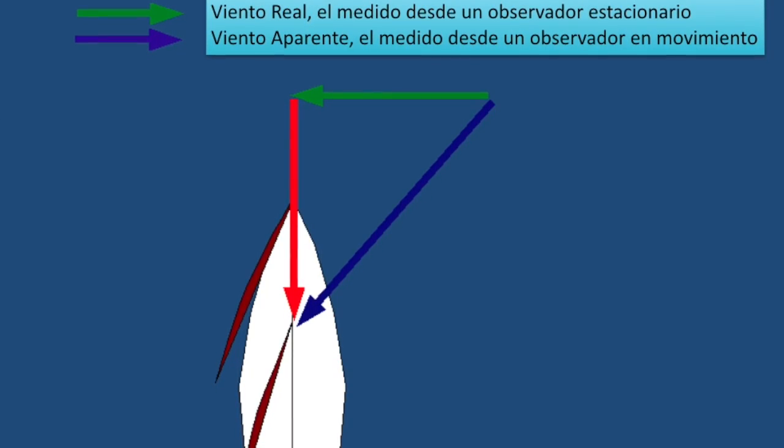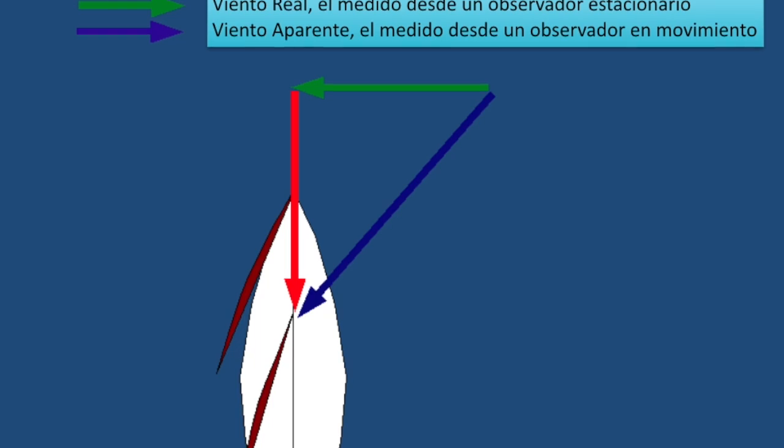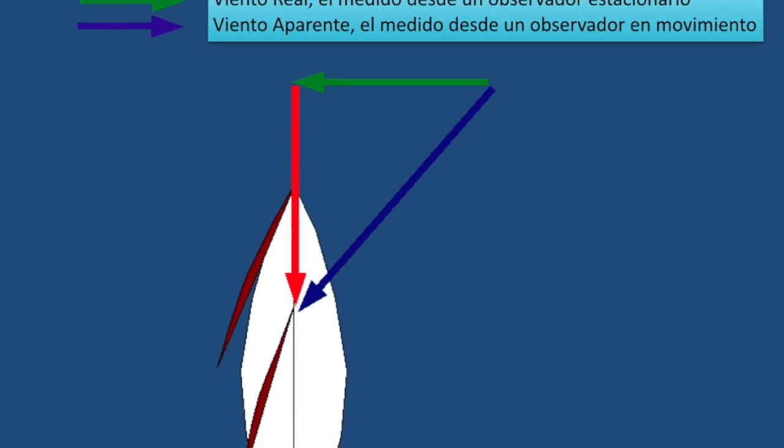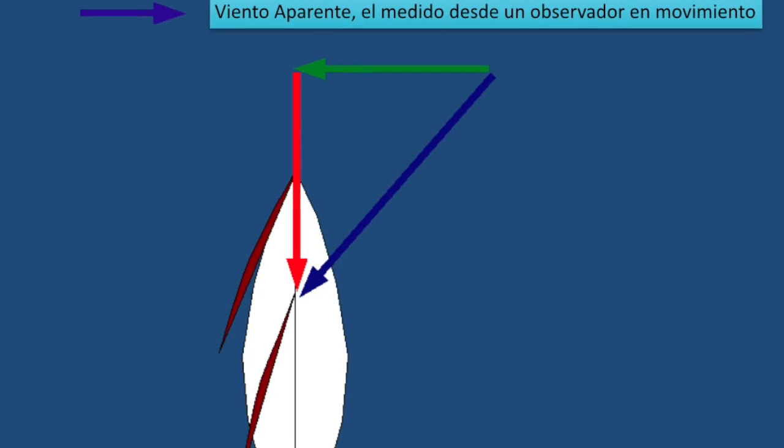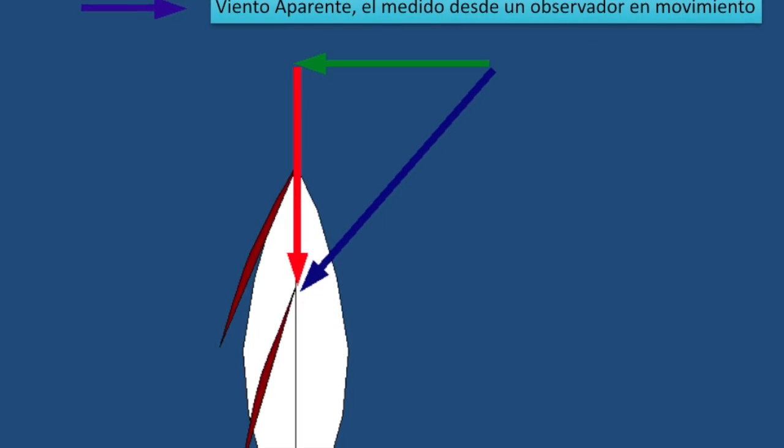Pero desde el observador que se encuentra en un barco, por ejemplo en un barco de vela, navegando a una cierta velocidad, hay que tener en cuenta que este viento se suma al viento que produce el barco en su avance.